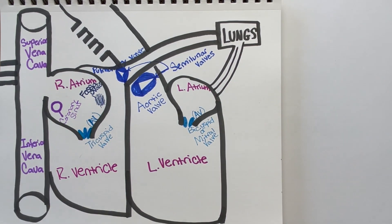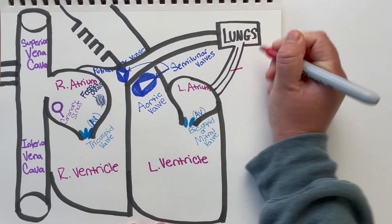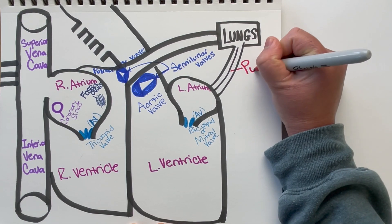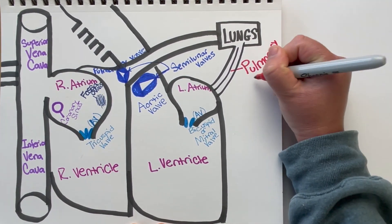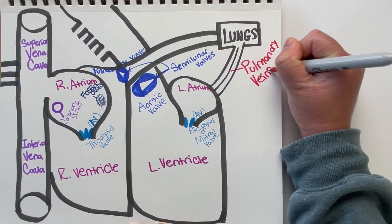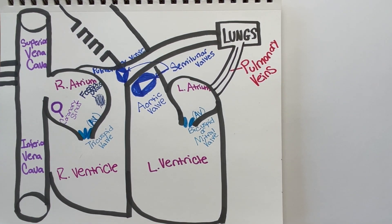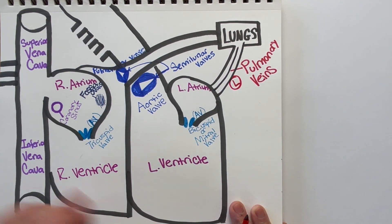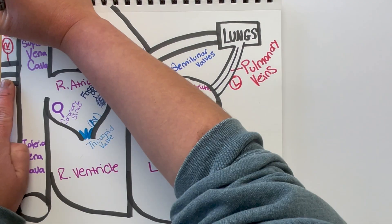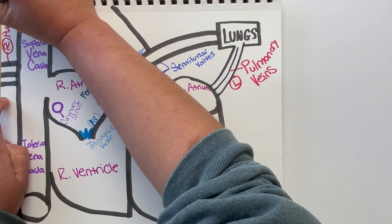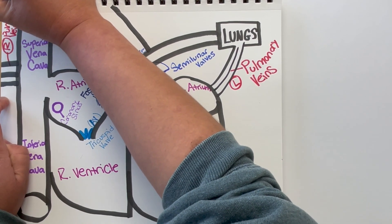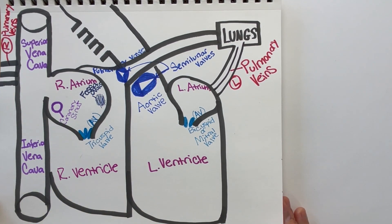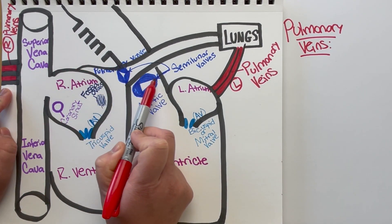Next, we have our pulmonary veins. Our pulmonary veins bring oxygenated blood from the lungs and drop it right into the left atrium. On the left side of the heart, we have our left pulmonary veins, which bring oxygenated blood from the left lung. And on the right side of the heart, we have the right pulmonary veins, which bring oxygenated blood from the right lung. Both of them drop blood right into the left atrium.